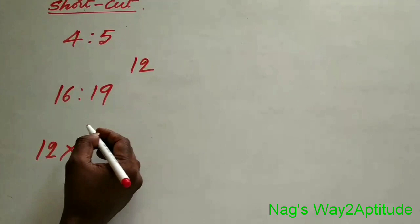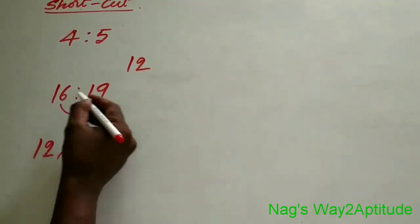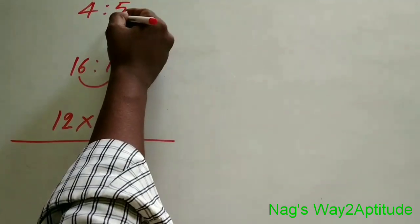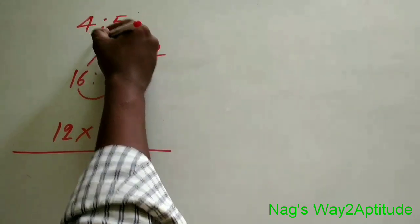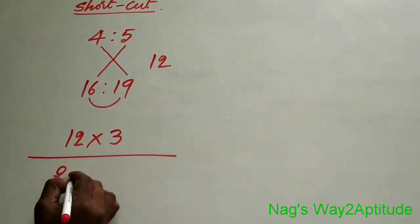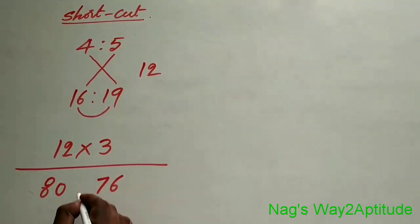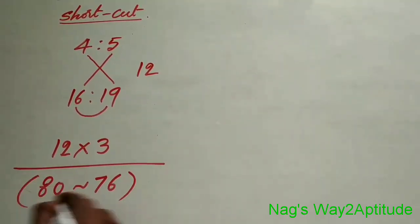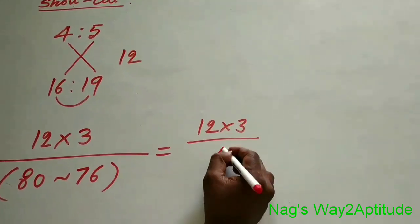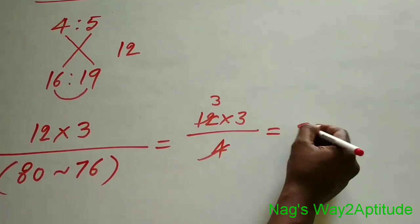After adding 12 to the original numbers, the new ratio is 16 is to 19. Now you take 12 into the difference between these two terms. The difference between 16 and 19 is 3. Now you do cross multiplication: 16 into 5 gives 80, and 4 into 19 gives 76. The difference between 80 and 76 is 4. So we have 12 into 3 divided by 4. 4 goes into 12 three times, and 3 threes are 9.